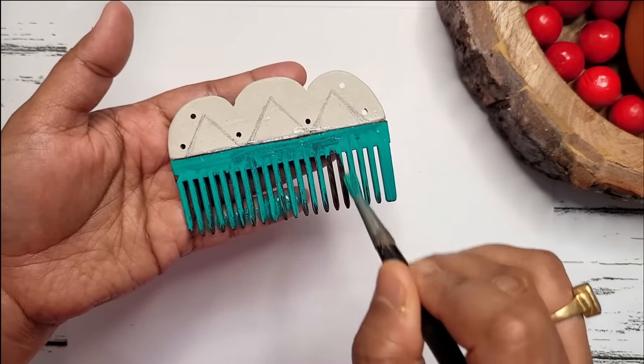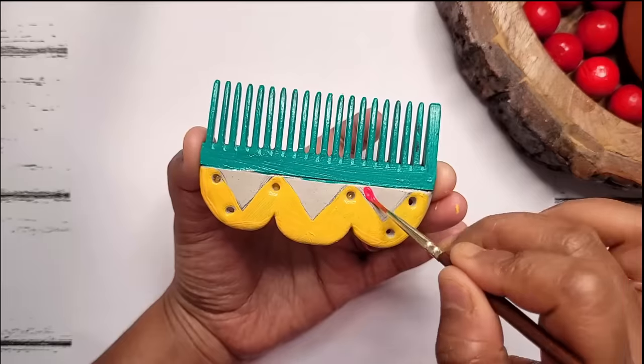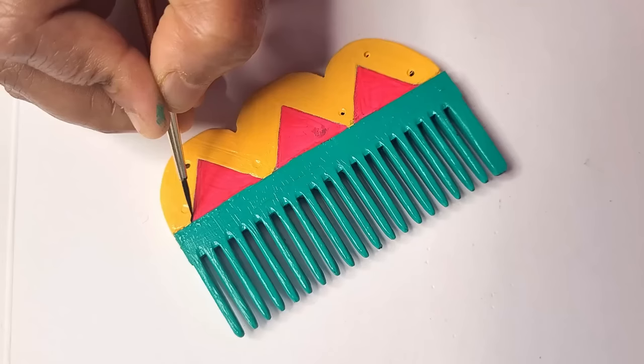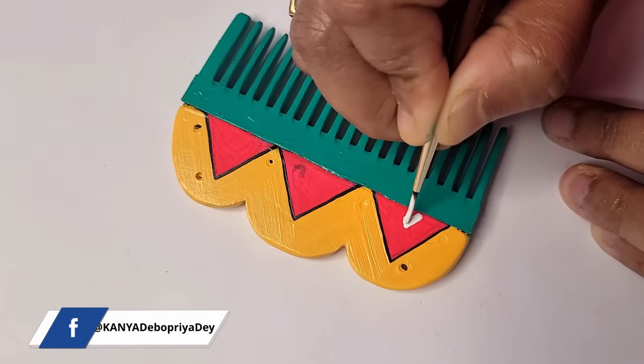Here on the comb part I'm applying teal blue color. Now applying neon pink color on the triangular part, using black color to draw the borders and drawing some triangles using white color.